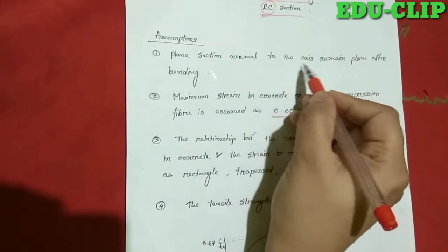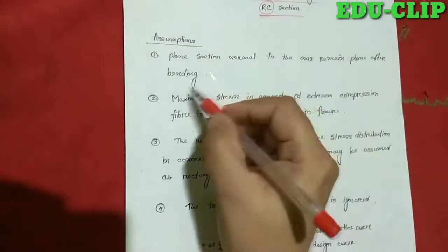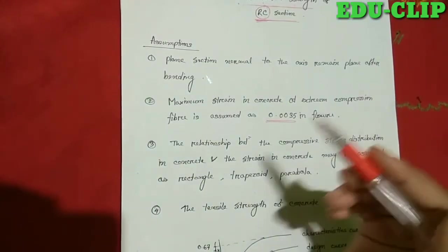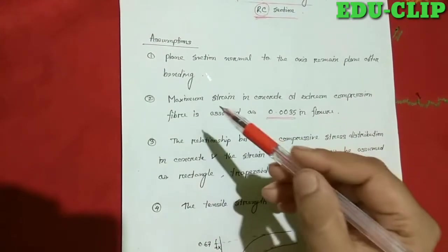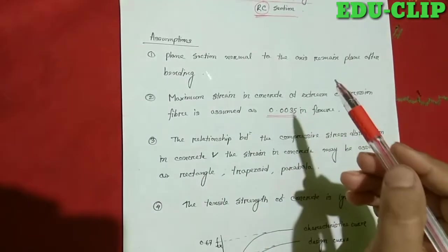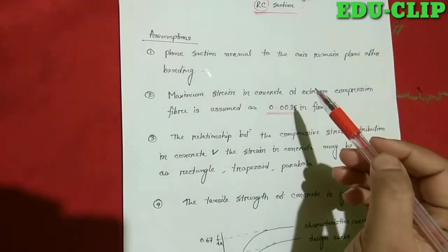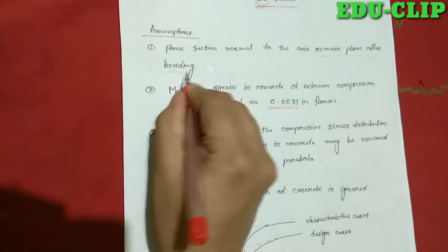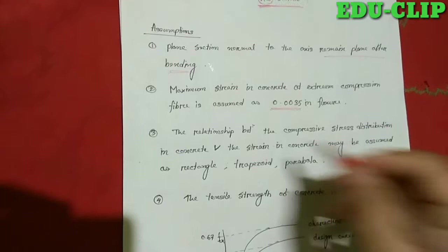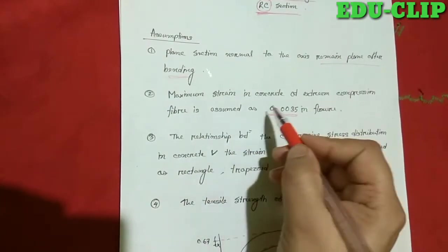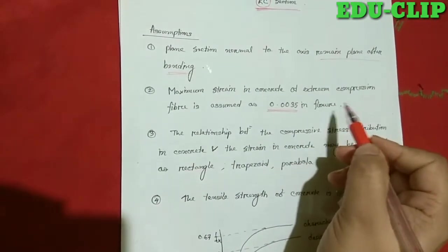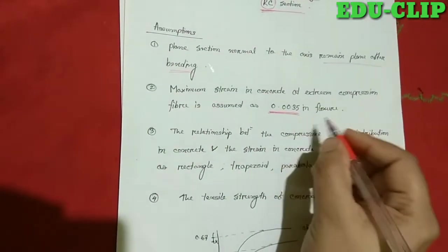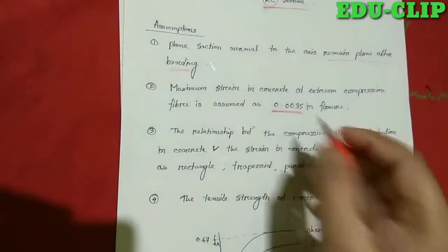The first assumption is: plane sections normal to the axis remain plane after bending. Suppose a structure is subjected to bending — if a plane section normal to the axis is already plane, it remains plane even after bending occurs. The second assumption is: maximum strain in concrete at the extreme compression fiber is assumed as 0.0035 in flexure.